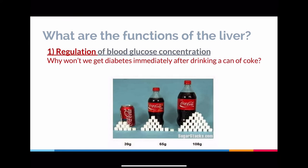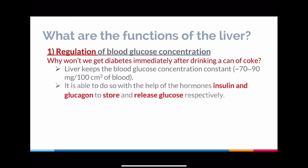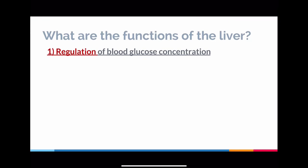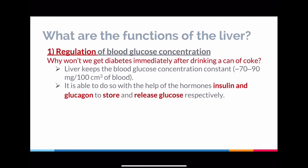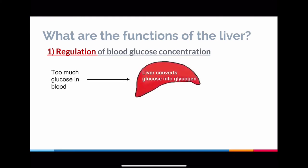That's why you don't get diabetes straight after drinking a can of Coke, which contains a lot of sugar — the liver keeps the blood glucose concentration constant. It does so by working with two particular hormones: one is called insulin, and one is called glucagon. These help to store and release glucose respectively. If there's too much glucose in the blood, the liver converts glucose into glycogen, and the blood glucose level returns to normal.